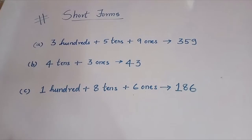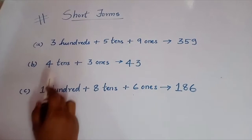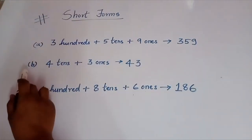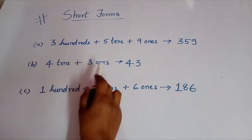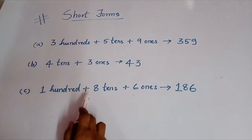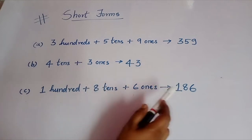Moving on to the next topic, that is short form. In the previous questions you learned to expand numbers according to place value. Now we are going to write expanded numbers in short form. For example, 3 hundreds plus 5 tens plus 9 ones — this is a 3-digit number, so you write 359. Second: 4 tens plus 3 ones — this is a 2-digit number, so you write 43. Third: 100 plus 8 tens plus 6 ones — you write 186.